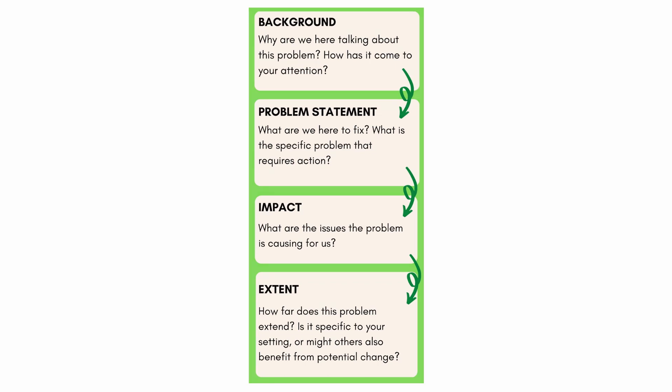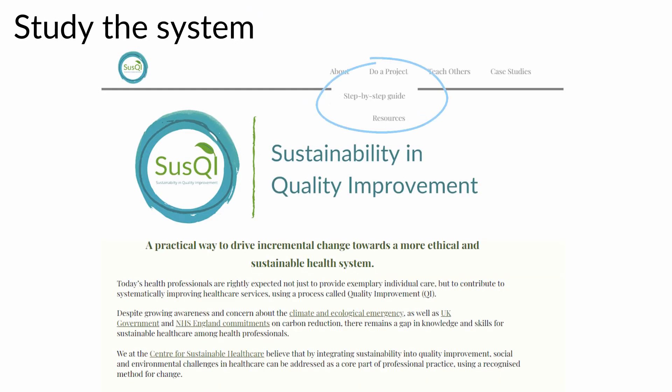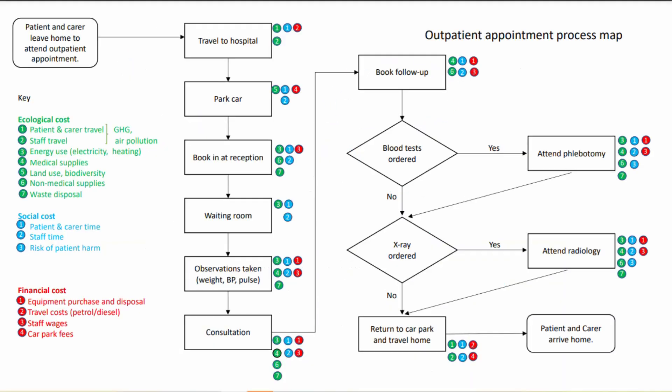Secondly, we study the system. This is where CSH have provided some specific tools on our SUSQI website for you to use, to help your students understand the environmental and social outcomes of their improvement ideas in order to satisfy the triple bottom line. Encourage your learners to draw out a process map. This helps us to work out what the system currently looks like and identify hotspots where we might intervene. For example, this process map shows a patient pathway for a standard outpatient appointment which includes visiting the hospital and follow-up tests. By using our scanning for resource use table as a guide, you can use your process map to identify hotspots — parts of your system where there is an over-reliance or overuse of resources or areas of excessive waste.